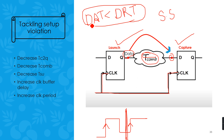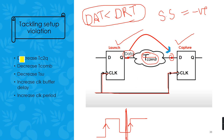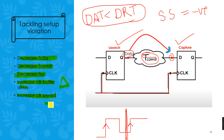If the setup slack is positive, there is still some margin left in the timing path. On the other hand, if the setup slack is negative, our design has violated the setup requirements. In order to meet the setup requirements, we have to either decrease the clock-to-Q delay, decrease the combinational logic delay, decrease the setup time, or increase the clock period T_clock.